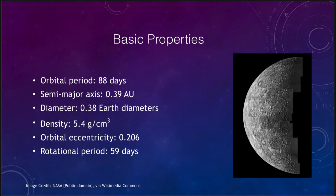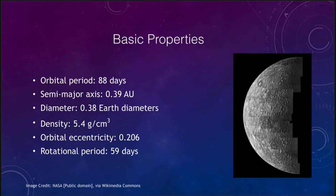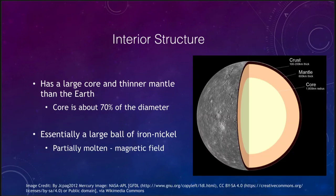Now let's look at the interior of Mercury and what we know about it. First, let's look at the image taken by the Mariner spacecraft that flew by Mercury back in the 1970s. We can see that overall it looks a lot like our own Moon — very heavily cratered. One thing we notice that's missing is the Maria. We do not see any Maria on Mercury.